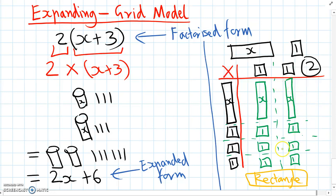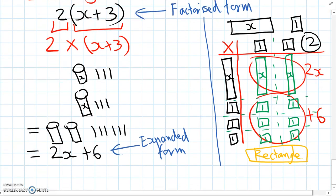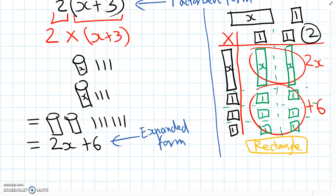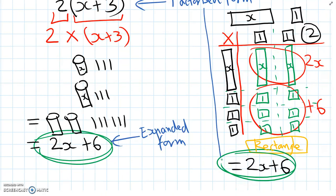Now we just need to group together all the like terms in the middle here. We have two x's, which means 2x, and we have six ones, which is just the number positive six. If we rewrite that as an expression, we have 2x plus 6. We can see that's exactly the same answer as we got before when we did the cups and the straws. This method is just another way of visualizing what we're doing to expand.